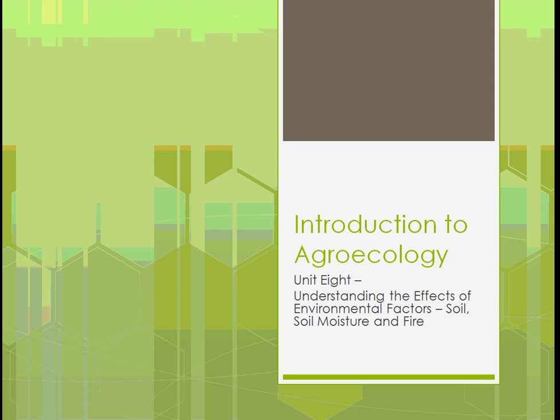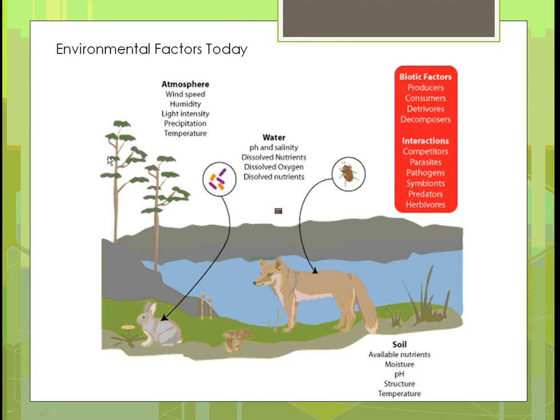We're going to talk about the effects of soil split into three sections. This diagram shows an example of the different environmental factors we'll be looking at. In the atmosphere, there's wind speed, humidity, light intensity, precipitation, and temperature — and how they affect plant growth. We're also going to look at water and soil: the pH and salinity, how much moisture is in it, how much dissolved nutrients and oxygen are in it, and the structure and temperature of soil.